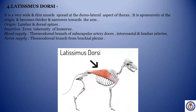Fourth: Latissimus dorsi. It is a very wide and thin muscle spread at the dorsolateral aspect of the thorax. It is aponeurotic at the origin and becomes thicker and narrower towards the arm. Origin: lumbar and dorsal spines. Insertion: teres tuberosity of humerus. Blood supply: thoracodorsal branch of subscapular artery, intercostal and lumbar arteries. Nerve supply: thoracodorsal branch from brachial plexus.